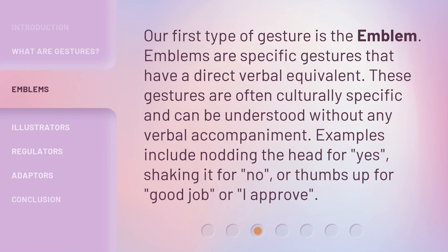Our first type of gesture is the emblem. Emblems are specific gestures that have a direct verbal equivalent. These gestures are often culturally specific and can be understood without any verbal accompaniment. Examples include nodding the head for yes, shaking it for no, or thumbs up for good job or I approve.